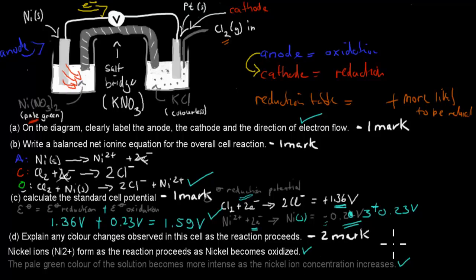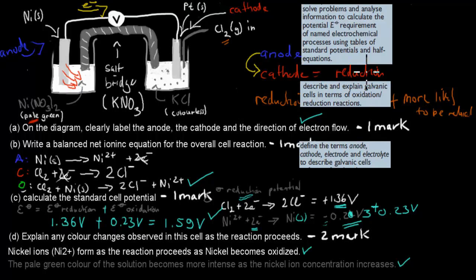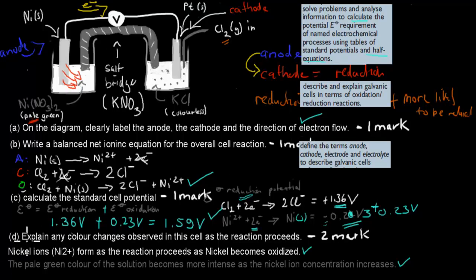Overall that's five marks for this question. The calculation and balanced equation parts came from the dot point on calculating cell potential using standard potentials and half-equations. Identifying anode, cathode, and direction of electron flow came from the dot point on describing galvanic cells in terms of oxidation and reduction. The color change question also links back to those dot points. I hope that was useful.